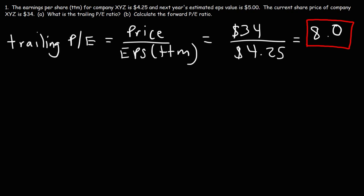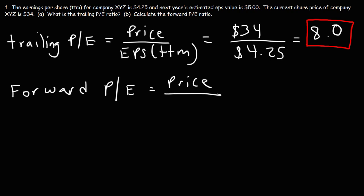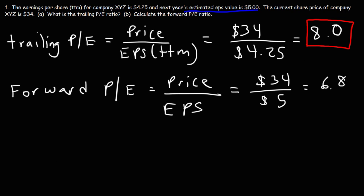Now let's calculate the forward P/E ratio. The forward P/E ratio is very similar to the trailing P/E ratio — it's equal to the price of the stock divided by the earnings per share. But the EPS value used is the estimated EPS for next year, which is $5 in this case. So it's $34 divided by $5, giving us a forward P/E ratio of 6.8. The trailing P/E gives the price-to-earnings ratio for the previous 12 months, whereas the forward P/E gives it for the next 12 months — past versus future.